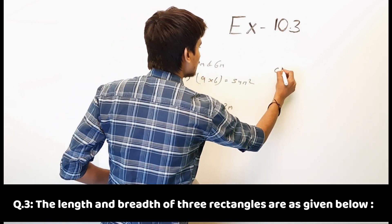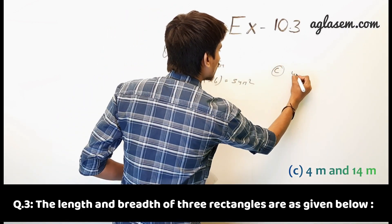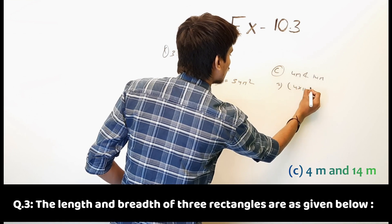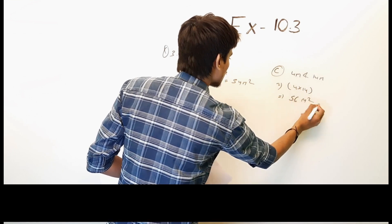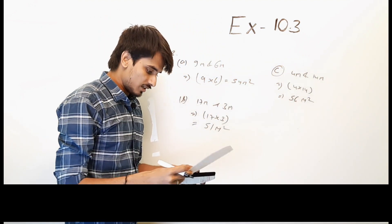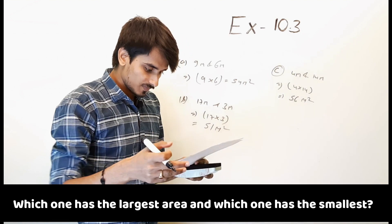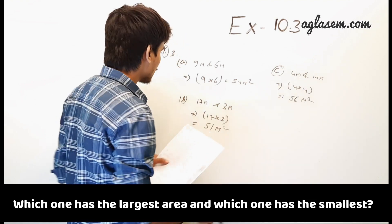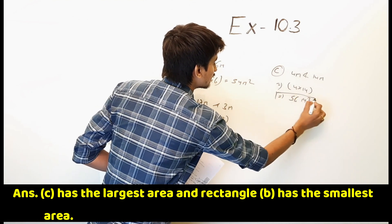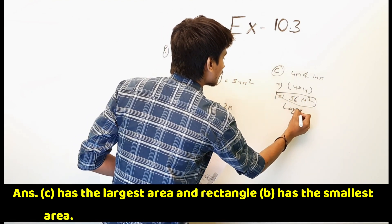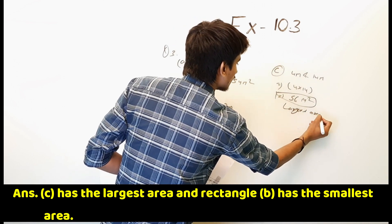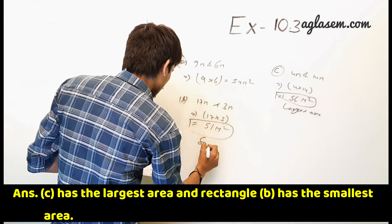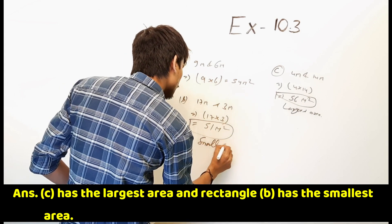Part C: 4 meter and 14 meter. The question asks which one has the largest area and which one has the smallest area. The largest area is part C. And the smallest area is 51, so B is the smallest area.